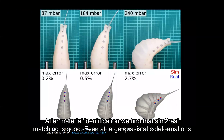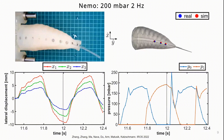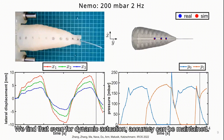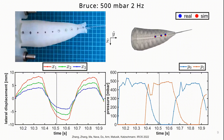After material identification, we find that sim-to-real matching is good, even at large quasi-static deformations. We find that even for dynamic actuation, accuracy can be maintained, and we show this for a variety of prototypes.